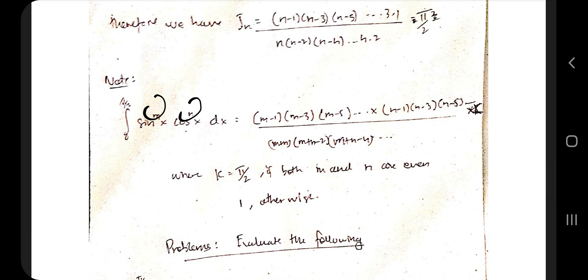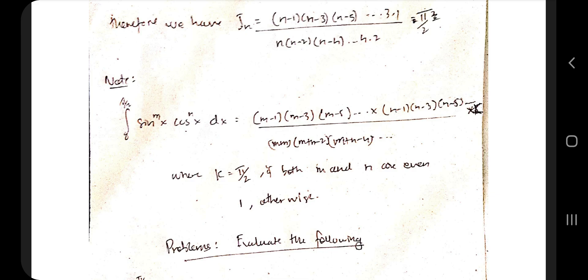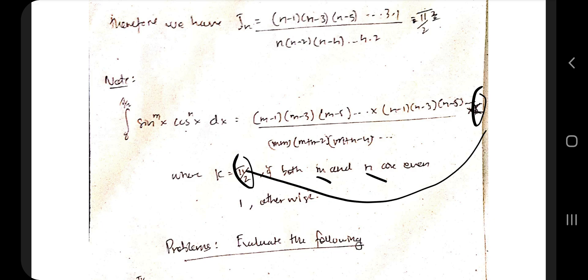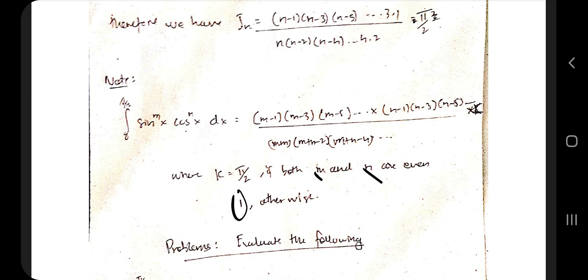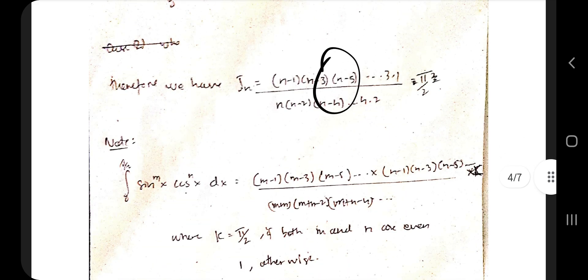Now for the I(m,n) formula — the m-n type. You write: (m-1)(m-3)(m-5)... times (n-1)(n-3)(n-5)... in the numerator, decreasing by 2 each time, and in the denominator (m+n)(m+n-2)(m+n-4)... At the end, multiply by k, where k = π/2 if both m and n are even, and k = 1 in all other cases.